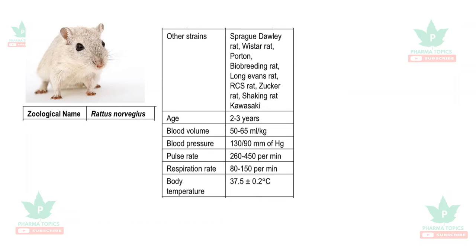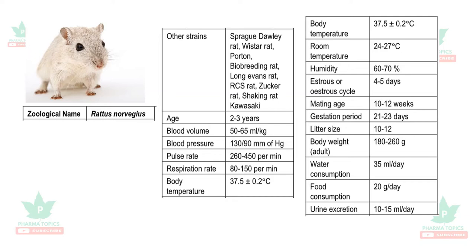The age of rats is around two to three years, blood volume is 50 to 65 ml per kg. Blood pressure is very similar to humans at 130/90 mmHg, respiration rate is 80 to 150 per minute, and body temperature is very similar to humans at 37.5°C. The humidity is 60 to 70 percent.